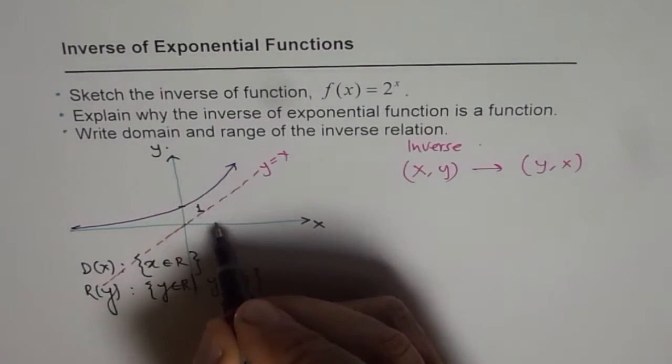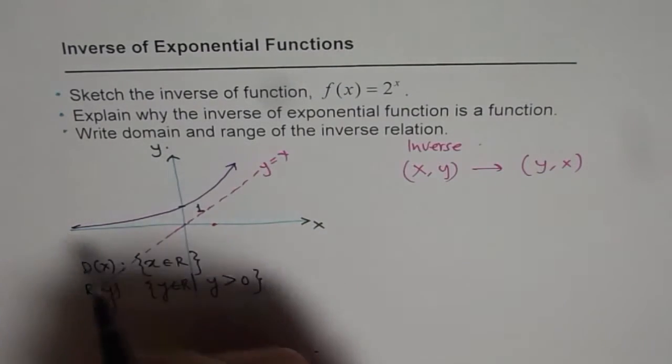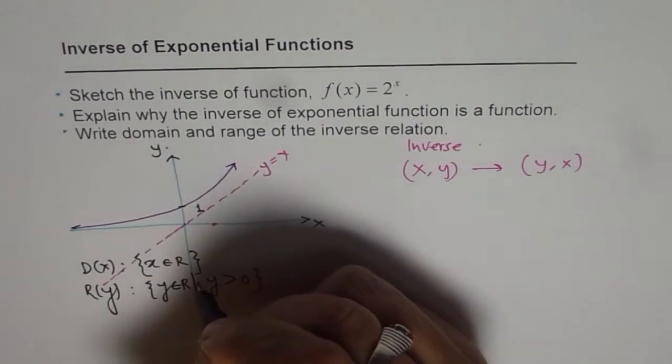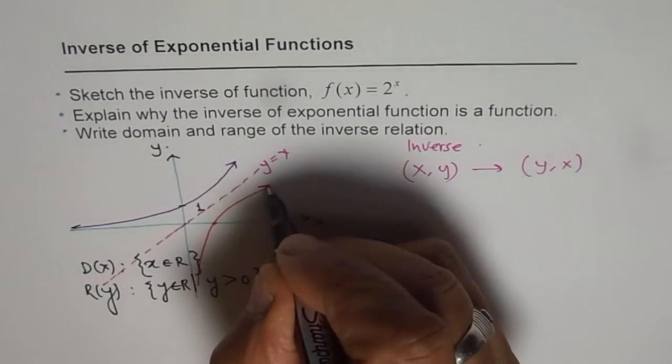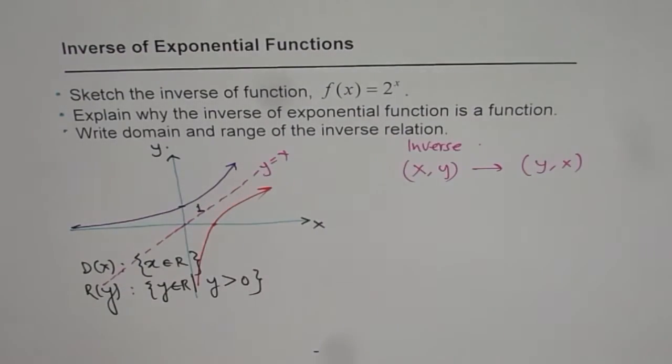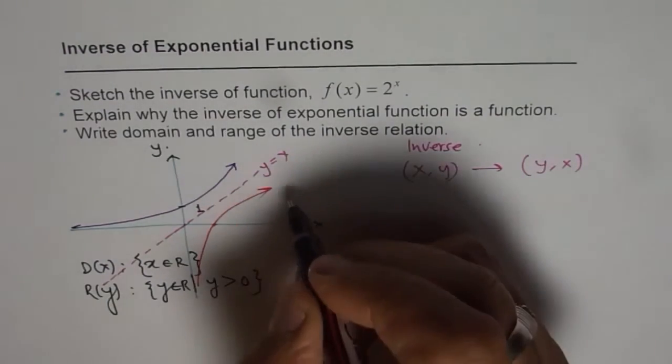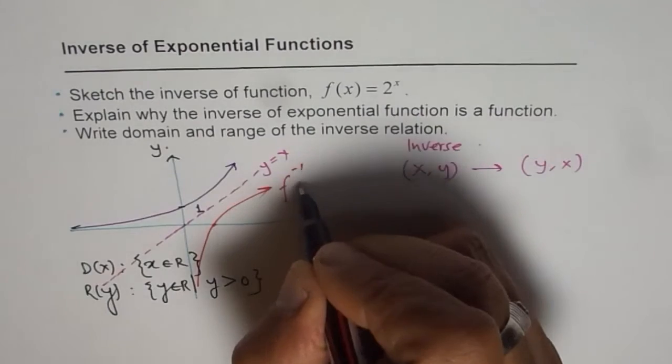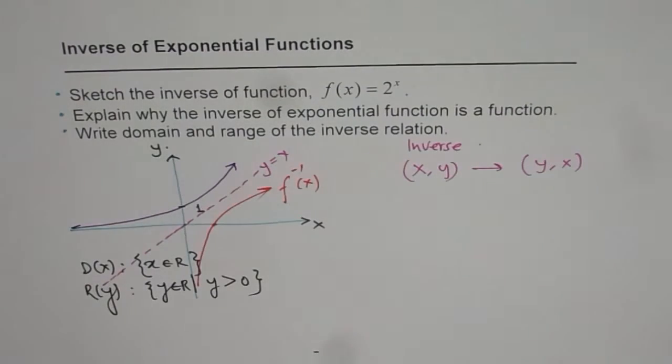Reflecting will mean this point will come here and this asymptote becomes a vertical asymptote here. So I get a function which is kind of like this, and this function will be the inverse of my function. That's the graph of the inverse function.